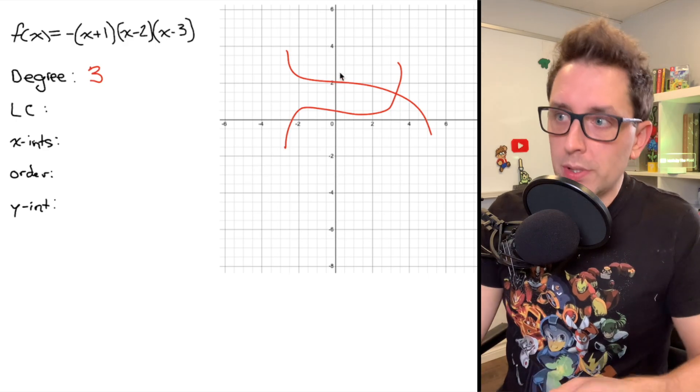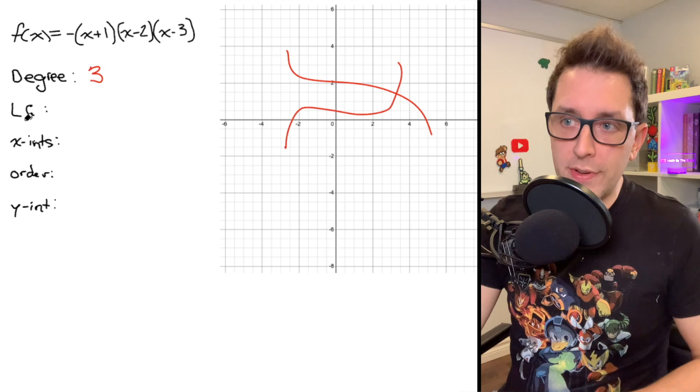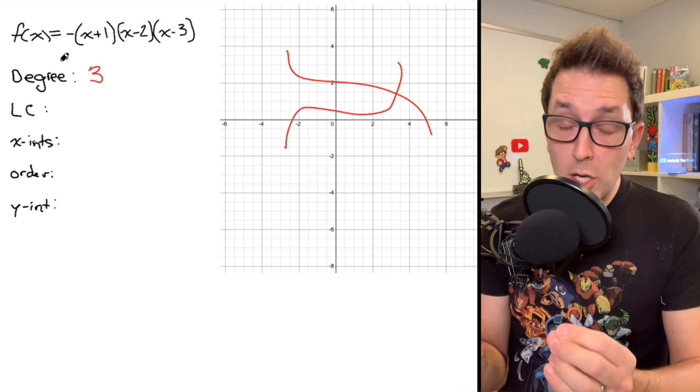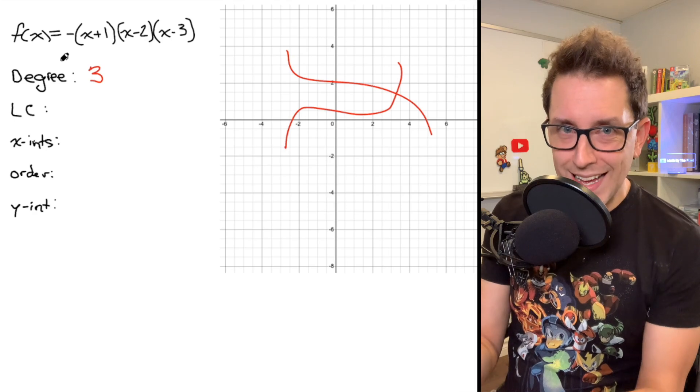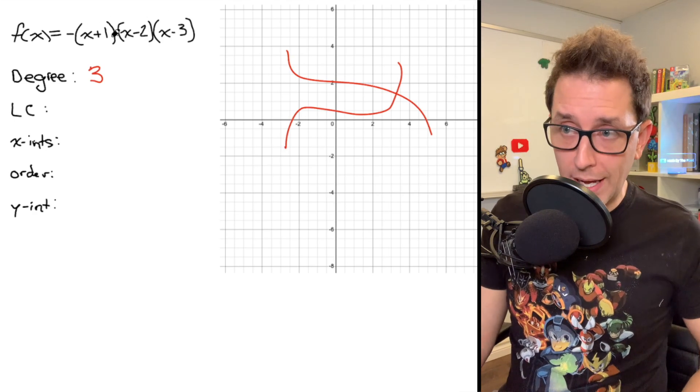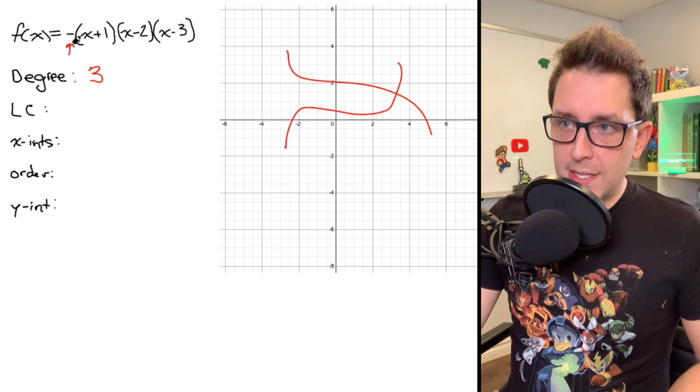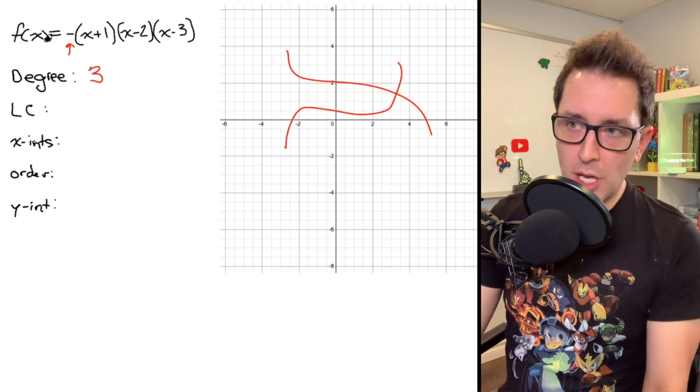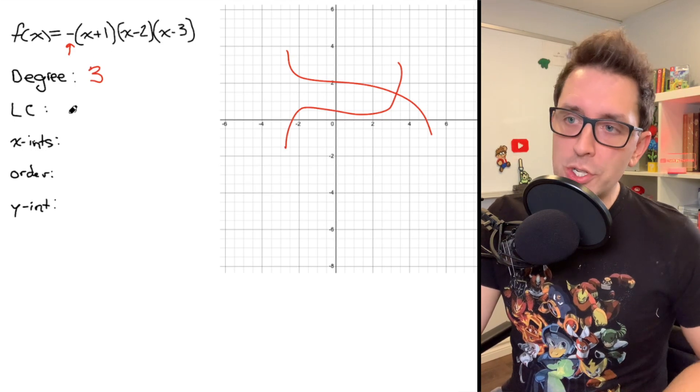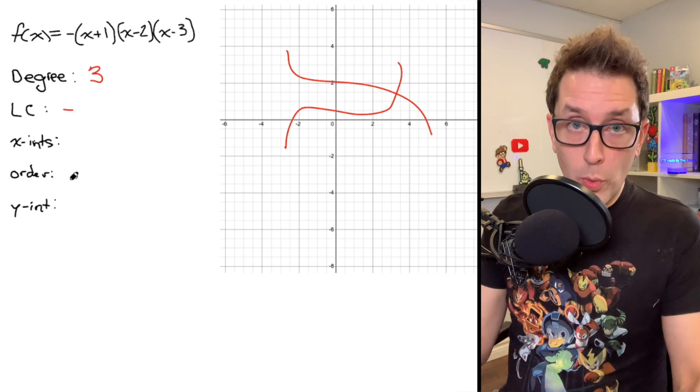Now the leading coefficient is going to be the coefficient on the term that has the highest power on x. Since we haven't actually expanded this out and simplified, we can't really just look at that highest power. But what we can do is look right here and see that we're multiplying this entire expression by a negative 1. So I'm not actually interested in the value of my leading coefficient, I'm more interested in the sign of the leading coefficient. And in this case we're working with a negative number.